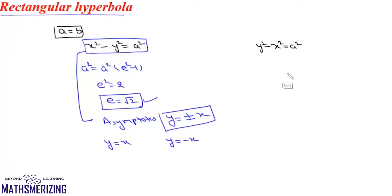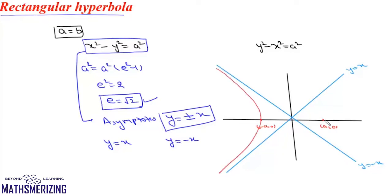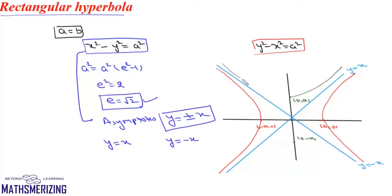We draw the rectangular hyperbola: first the axes, then the asymptotes y = x and y = -x. The vertices are (a, 0) and (-a, 0), and we draw one branch on the left and the other on the right. The conjugate hyperbola has vertices at (0, a) and (0, -a) and is drawn on the same setup. For a rectangular hyperbola, the angle between asymptotes is always 90° and eccentricity is always √2.